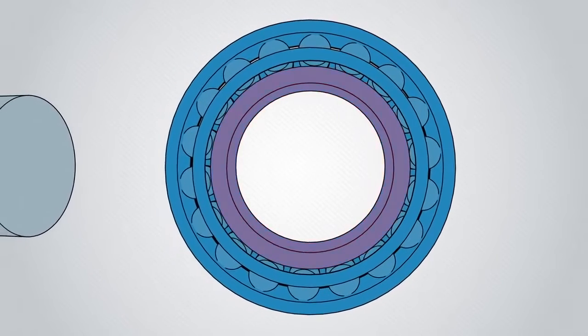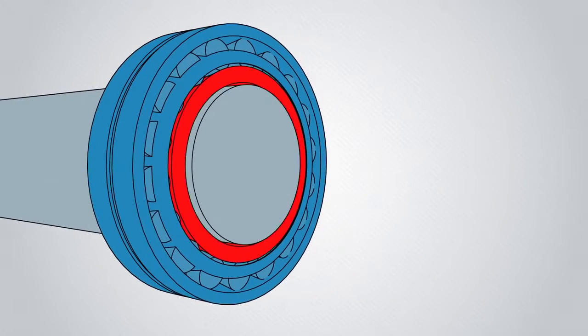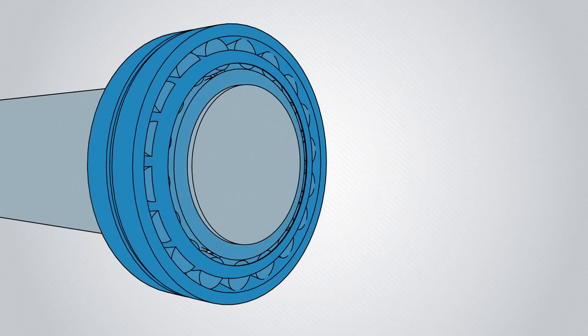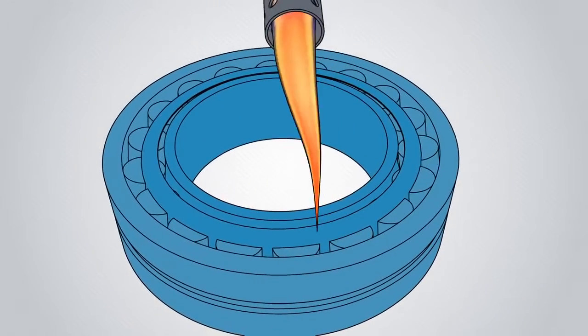This is why heat is used to expand the bearing inner ring before placing on the shaft. As the bearing cools, a stronger interference fit results. Direct flame should never be used as the bearing can be damaged.